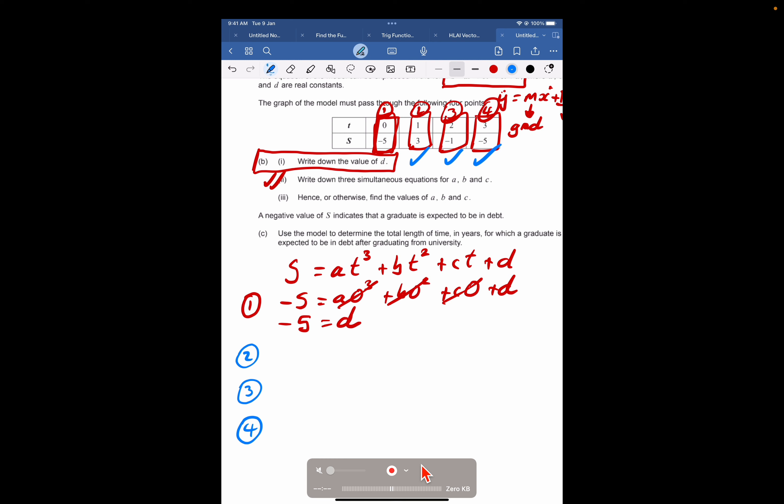Let's go ahead and substitute in. So S is 3 for this one, S is negative 1 for this one, S is negative 5 for this one. The T is 1 here, so A times 1 cubed, plus B times 1 squared, plus C times 1, and now plus D. D is negative 5. The next one, number 3, T is 2. A times 2 cubed, plus B times 2 squared, plus C times 2, minus 5. And the number 4 equation, that's T equals 3. A times 3 cubed, plus B times 3 squared, plus C times 3, minus 5.